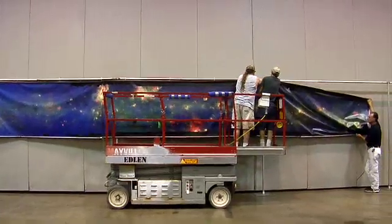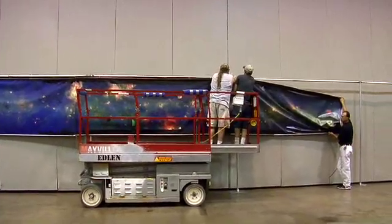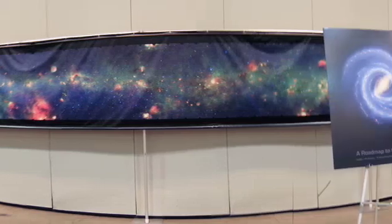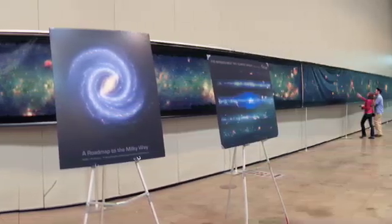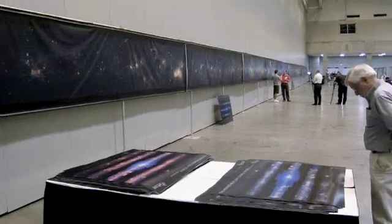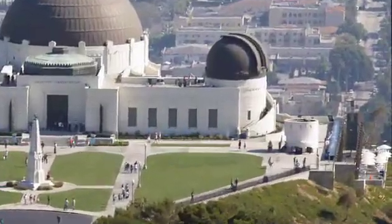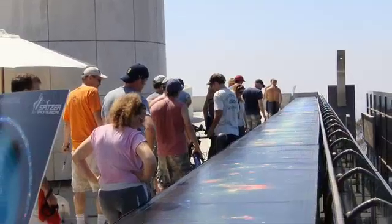A space image this big takes a lot of space to show off. Spitzer unveiled this giant banner, 4 feet tall and 180 feet long, at the 2008 Summer Meeting of the American Astronomical Society in St. Louis. Since then, it's been on display at the Adler Planetarium in Chicago and at the Griffith Observatory in Los Angeles.